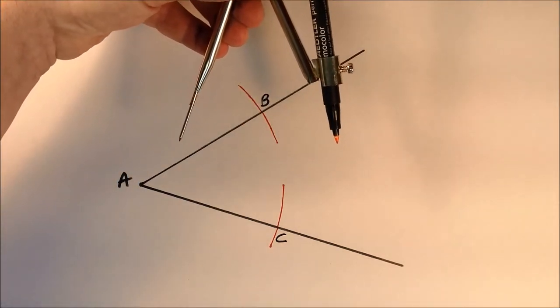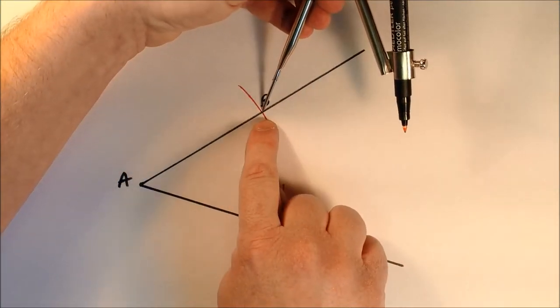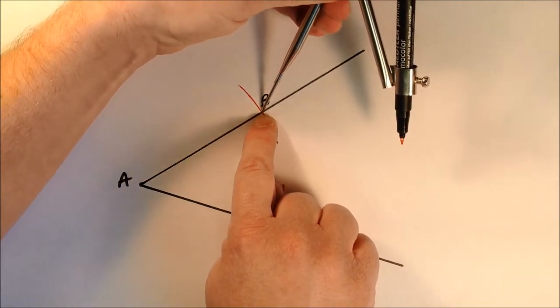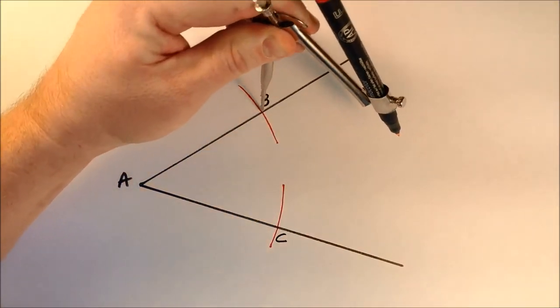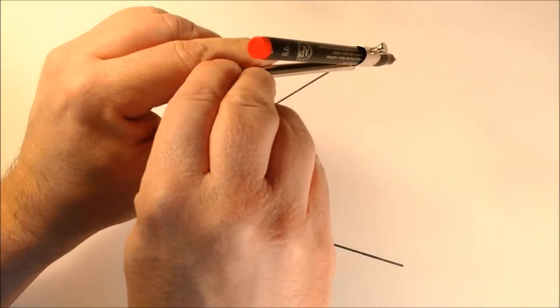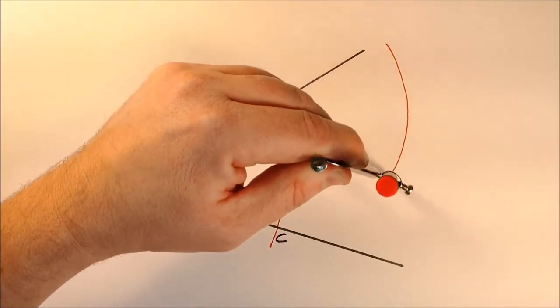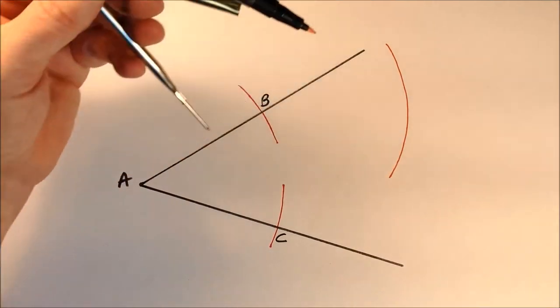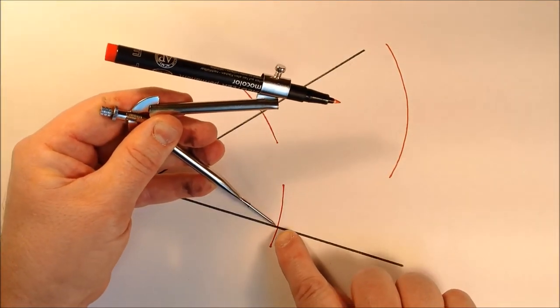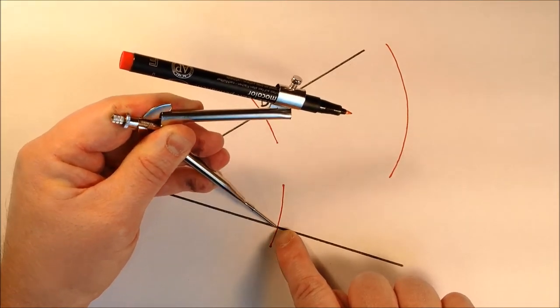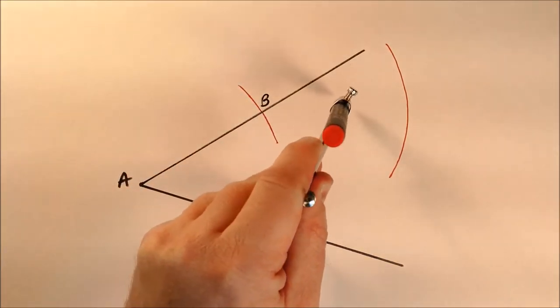Now with my compass again, I'm going to put the point in at B and I'm going to make an arc out here, and with the point in at C, I'm going to make another arc out here.